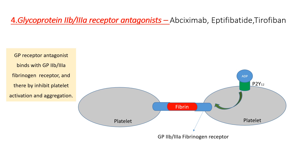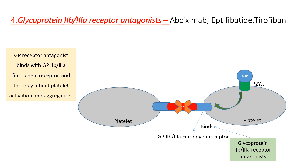The next class is glycoprotein 2B3A receptor antagonists. These drugs bind with the GP2B3A fibrinogen receptor and inhibit the binding of the receptor with fibrin, thereby inhibiting platelet activation and aggregation.